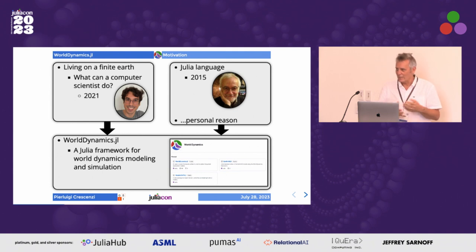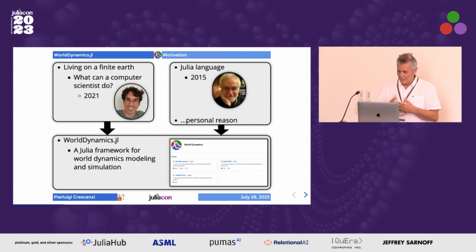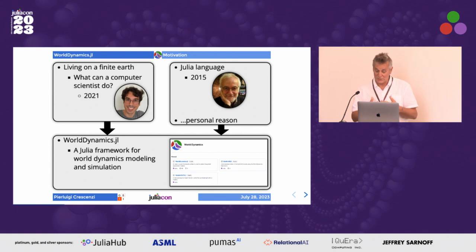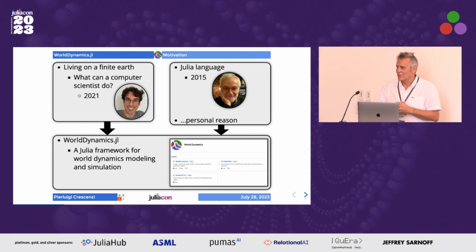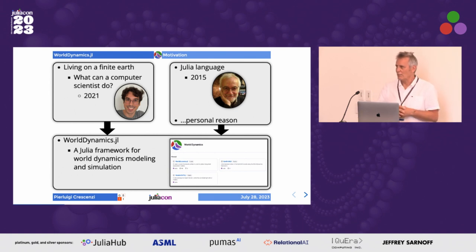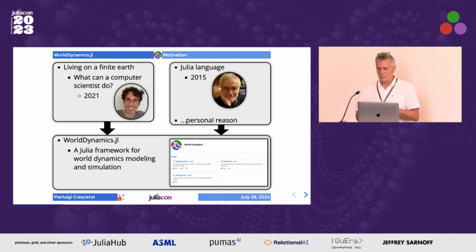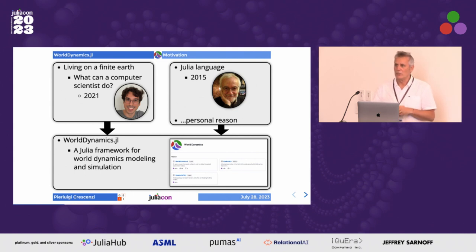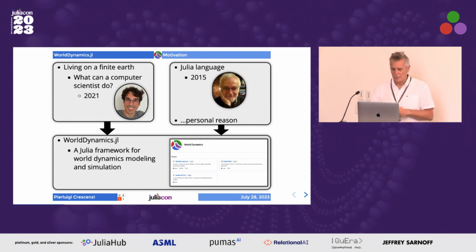So the two things combined and at the end produced the package WorldDynamics.jl. As I said, it's a Julia framework for modeling and simulating world dynamics. In the WorldDynamics GitHub organization we now have the package WorldDynamics.jl, but we also have two other repositories: EarthForAll.jl and VenSim2MTK.jl, and I will say something about these other two repositories during the presentation.